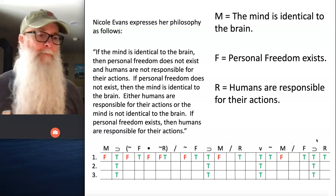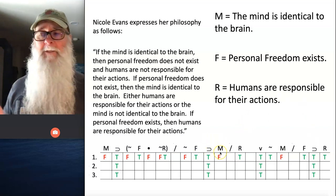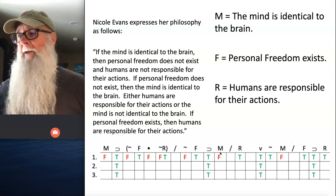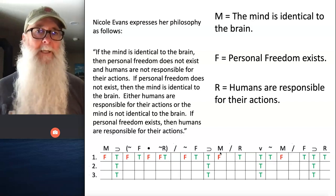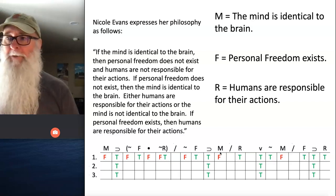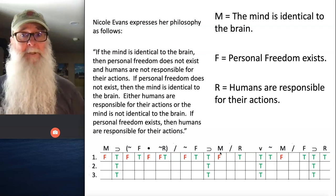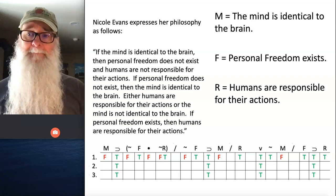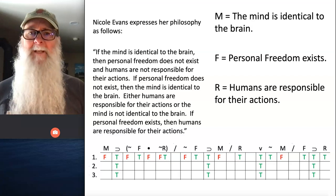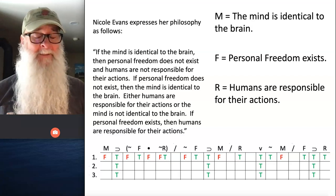You may have started with different initial assumptions and had to run more than one line — that's okay. If you ran two or three lines, one of those lines should have allowed you to deduce all the logically necessary truth values without contradiction. In the next lecture, I'm going to talk about the significance of what this truth table reveals.